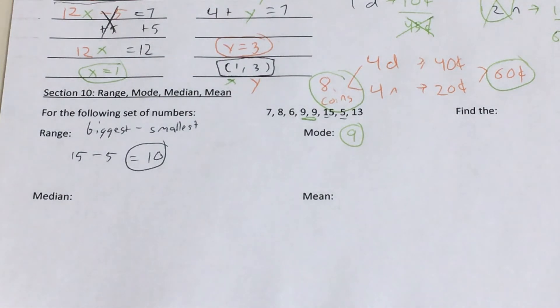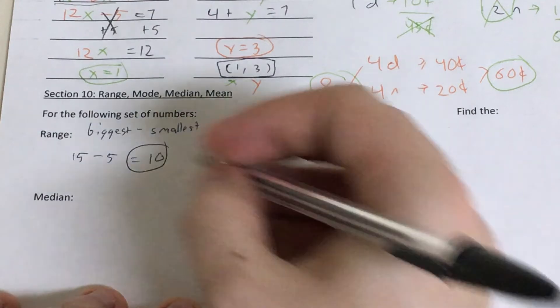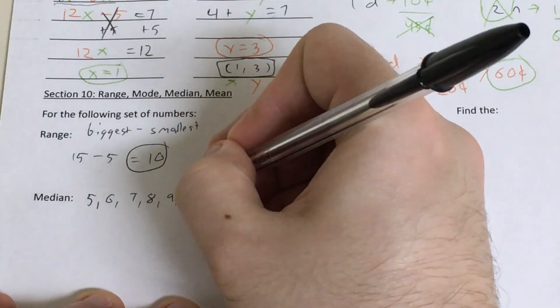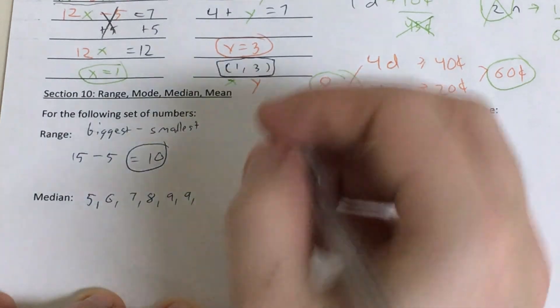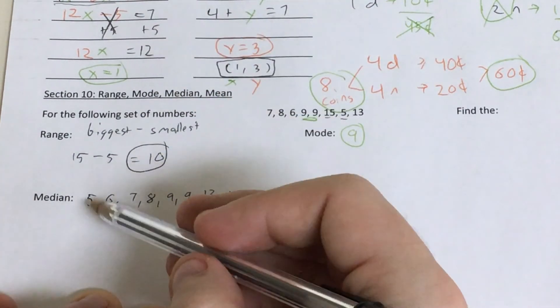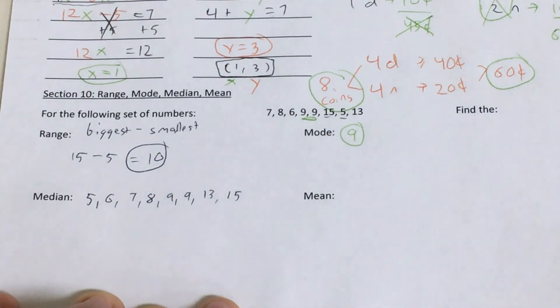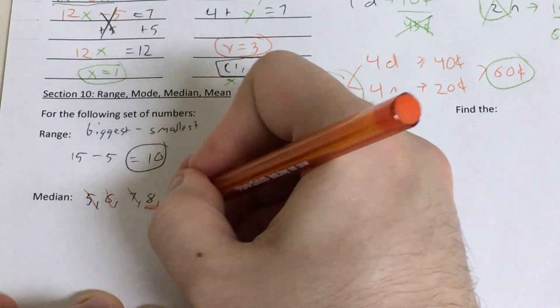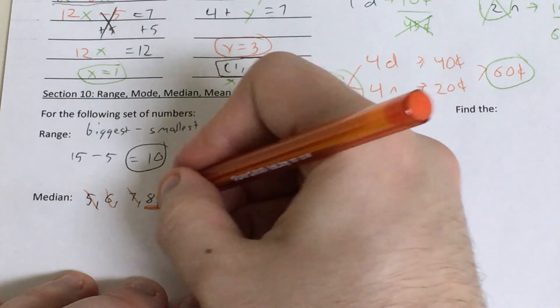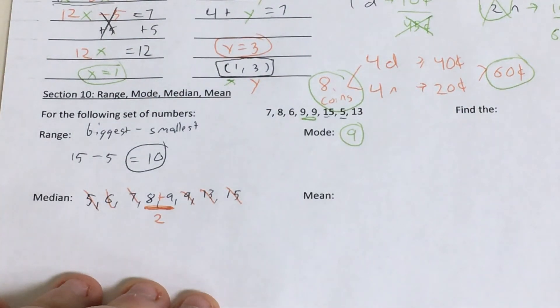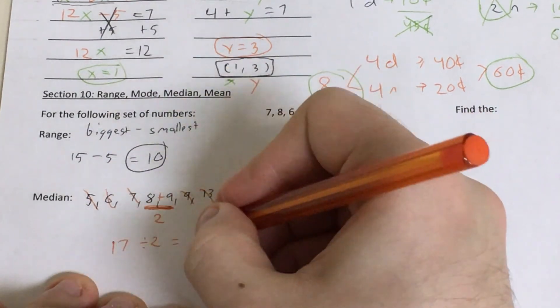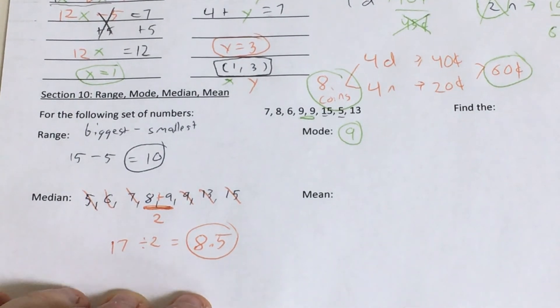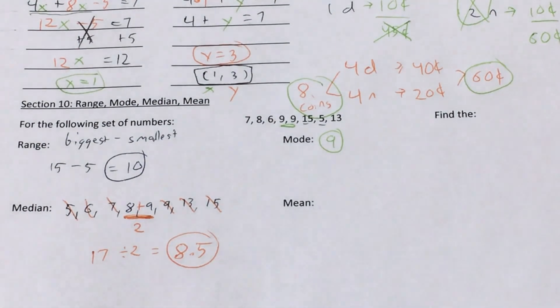Down here, my median is going to be the one that's right in the middle once I've ordered them all from smallest to biggest. So I'm going to start by actually going ahead and ordering these. That would be 5, 6, 7, 8, 9, 9, 13 and 15. So I have 1, 2, 3, 4, 5, 6, 7, 8 numbers. I'll use what I call the cross-out trick, where I cross out from the bottom and the top, bottom and the top, bottom and the top. What I'm left with is two numbers in the middle here. This is where it gets a bit tricky. What I have to do is find 8 plus 9 and divide it by 2. So this would give me 17 divided by 2, which is 8½, right between 8 and 9. So you can think of it as the average, or you can think of it as whatever number is right in the middle there.